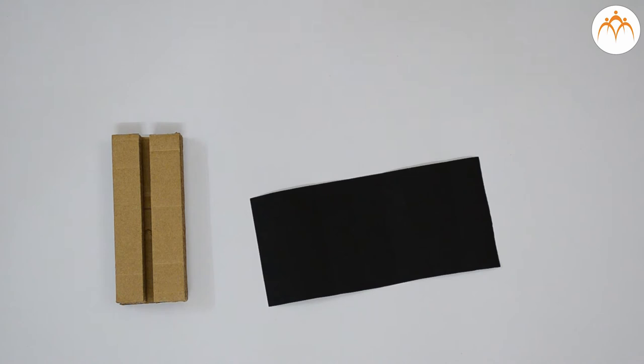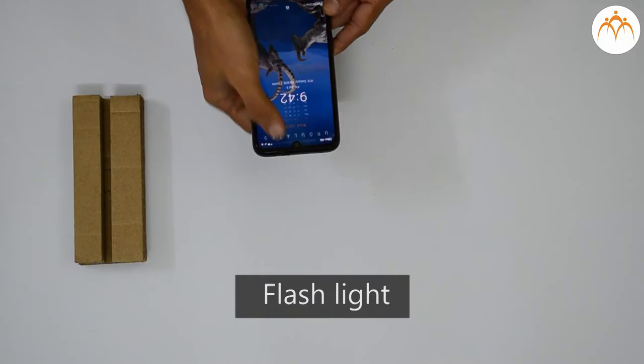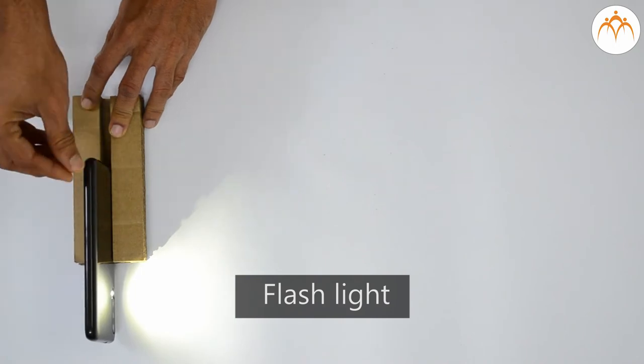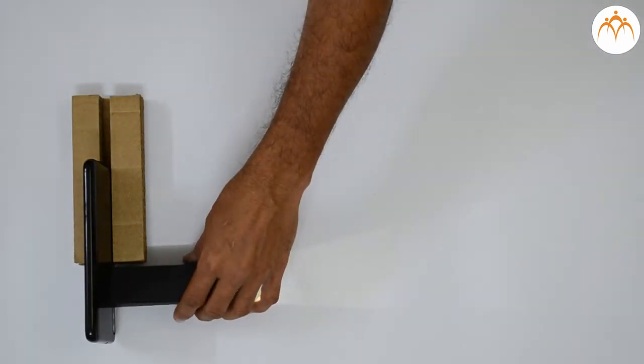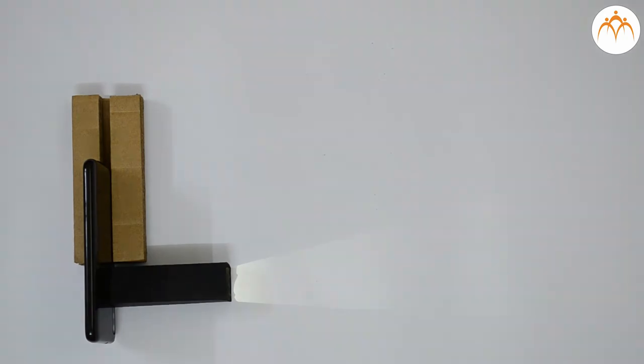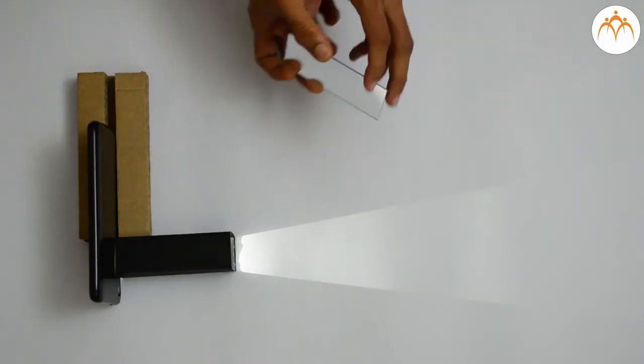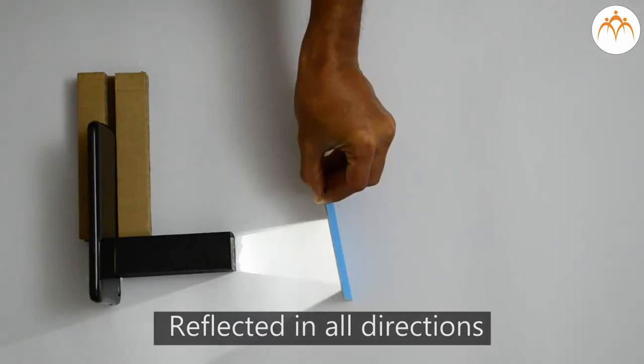We'll make a square tube from this black paper. We'll use flashlight from the phone as our light source. Let us place this square paper tube in front of it. You can see beam of light coming out. What will happen if I place a mirror in front of it? The beam gets reflected in all directions as I rotate the mirror.